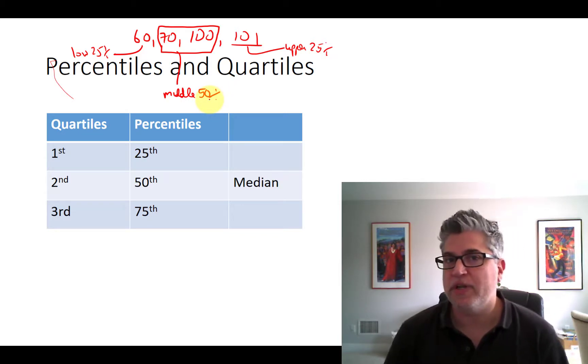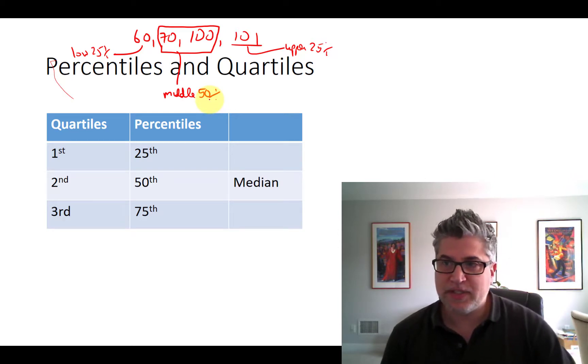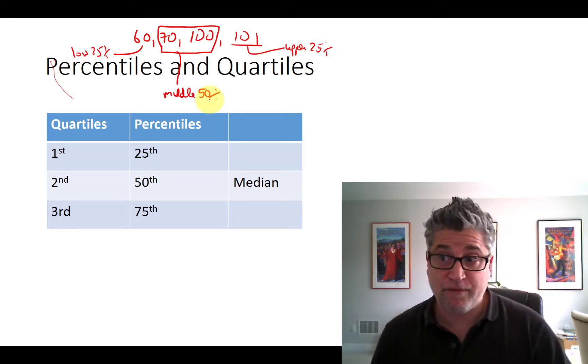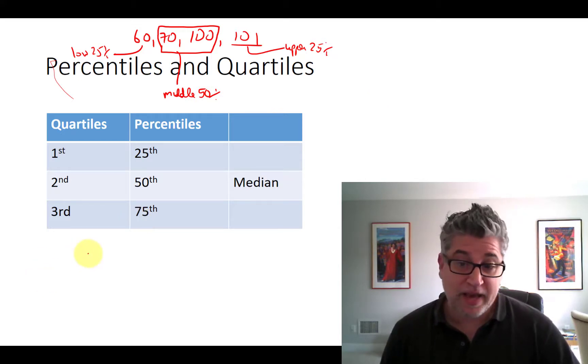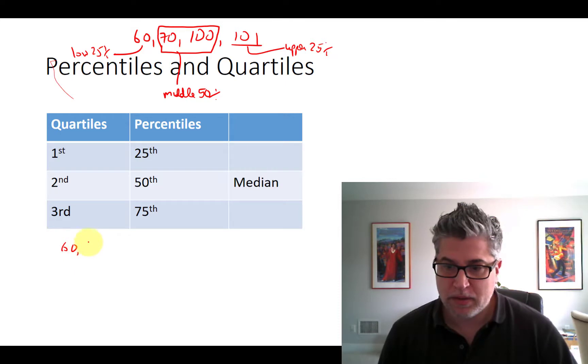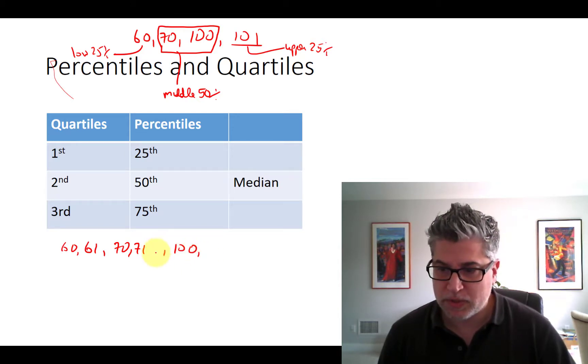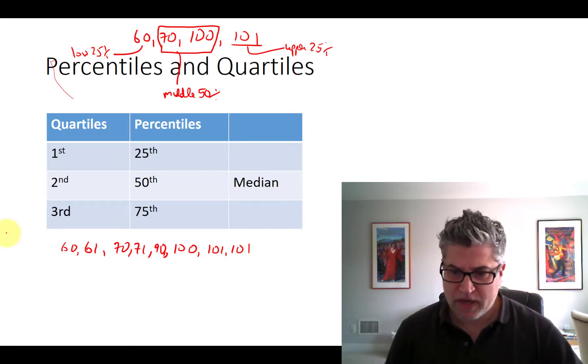This is going to give us a flavor of what interquartile range means. Now this is a very simple example because I only have four numbers. But if I had more than that, if I had eight numbers: 60, 61, 70, 71, 100. Let's squeeze in some numbers here. 90, 100, 101, and 101 again.